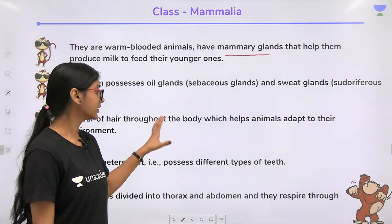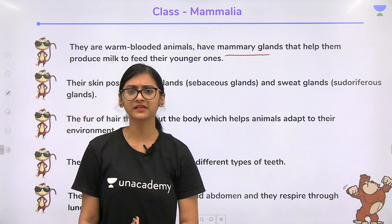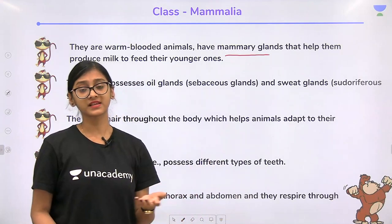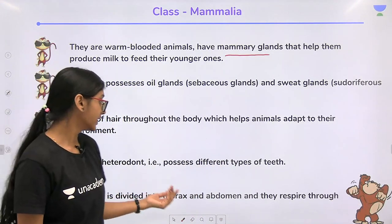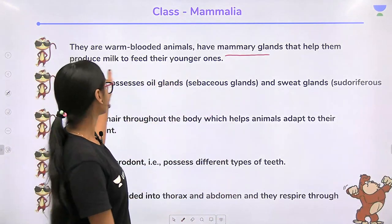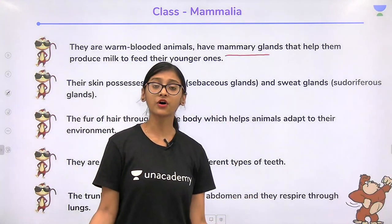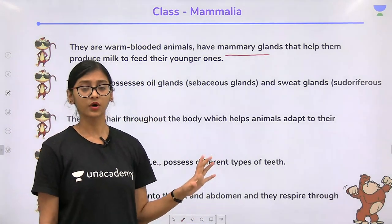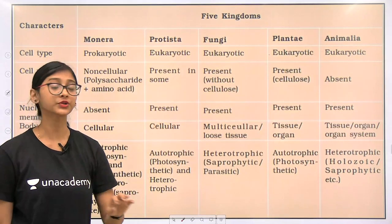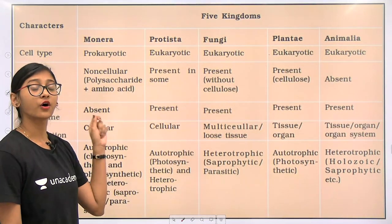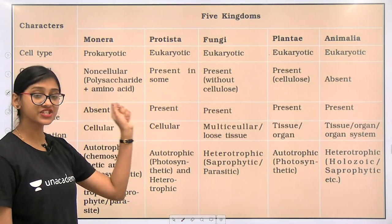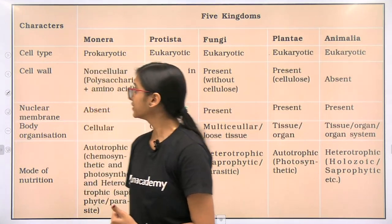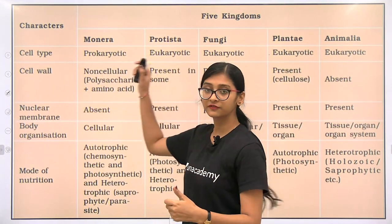Examples of mammals include human beings, deer, cow, giraffe, and monkeys — it is very easy to remember examples for mammals. Now we will summarize everything studied in previous classes. It is very important to remember all kingdoms and key features of each for the exam.